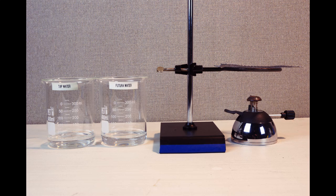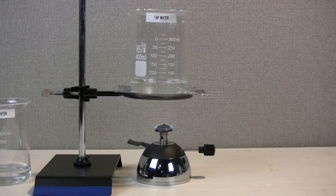We start with two labeled beakers. We fill the first beaker labeled tap water with 50 milliliters of tap water and fill the second Vitura beaker with 50 milliliters of Vitura-treated water.